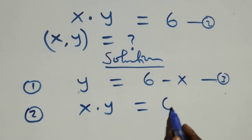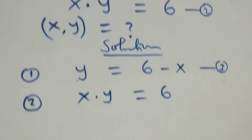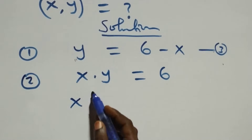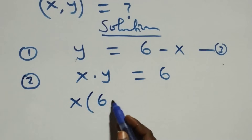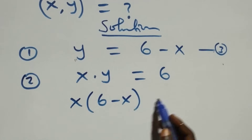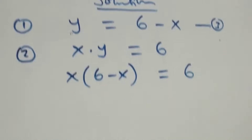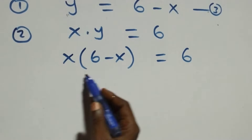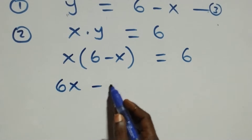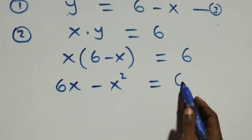From equation two, which is x times y equals 6, we substitute equation three. That is, x times y becomes x times (6 minus x), which equals 6. Expanding the bracket gives us 6x minus x squared equals 6.